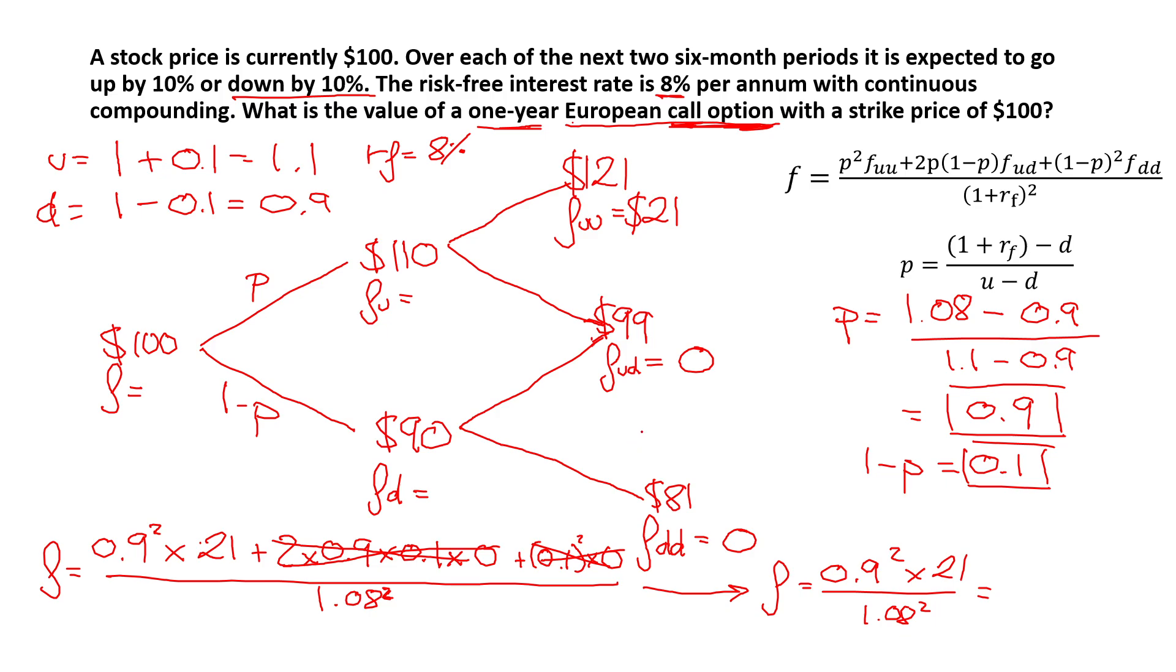We get that F is equal to 14.58. Therefore, this is the current value of a one-year European call option with a strike price of 100.